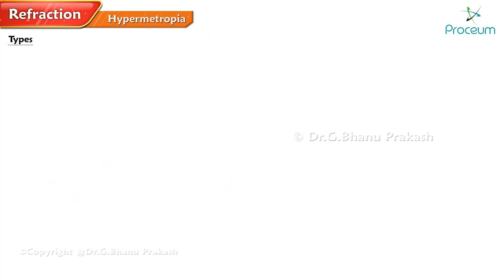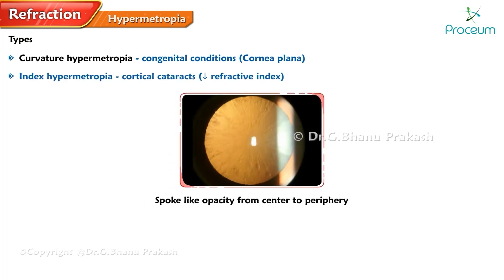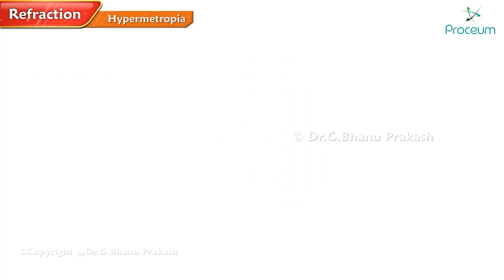Curvature hypermetropia is seen in congenital conditions like cornea plana and sclerocornea. Index hypermetropia is seen with cortical cataracts that lead to decreased refractive index.